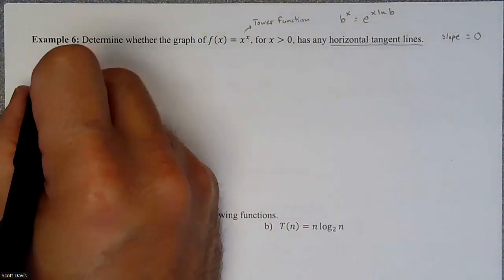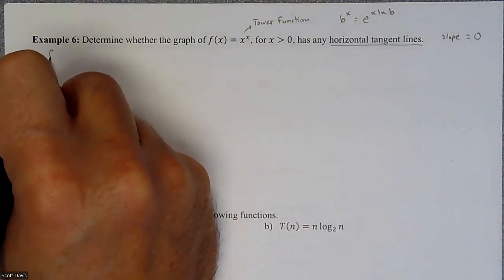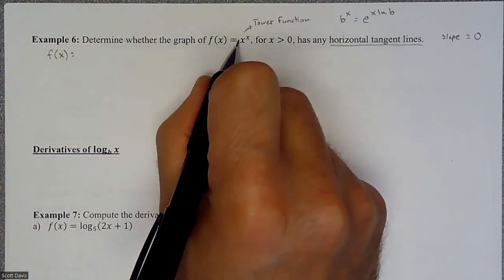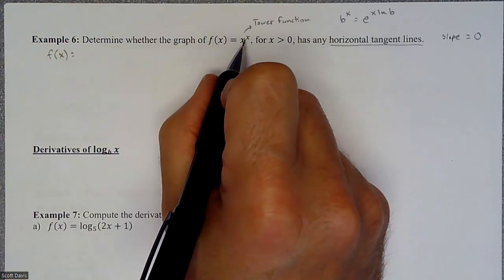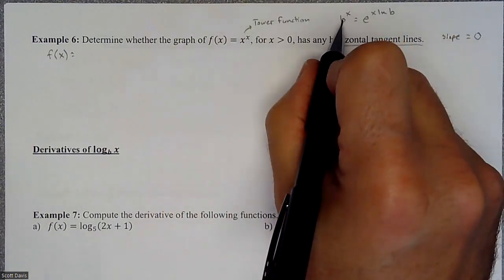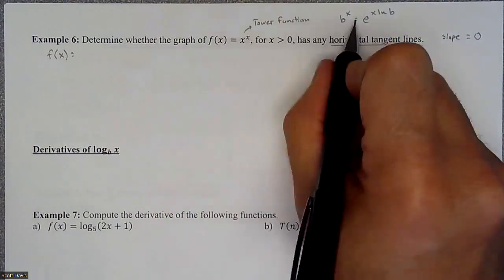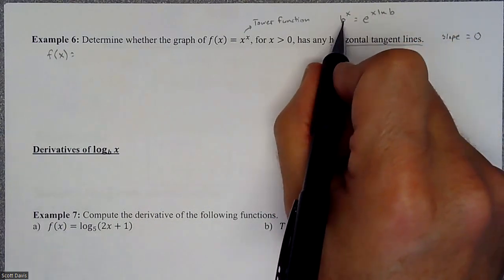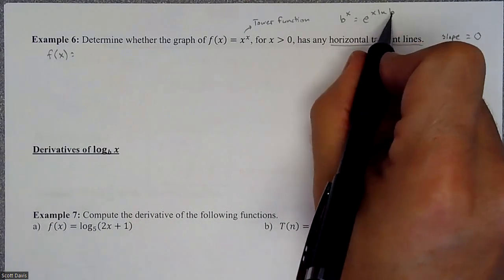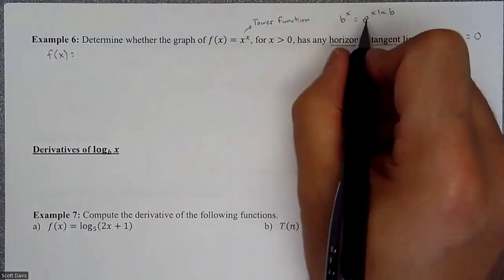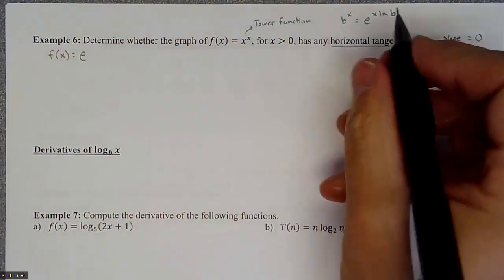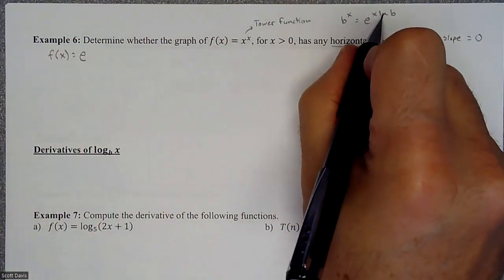Very first thing is we're going to do the derivative. However, I want to manipulate this. If I have any tower function, I need to manipulate it. So if you have something raised to a power, you can rewrite it. I use a and b just to see which piece goes where, because if I went x to the x, then I don't know which x is which.